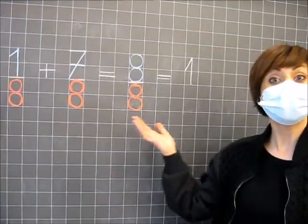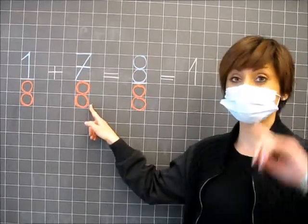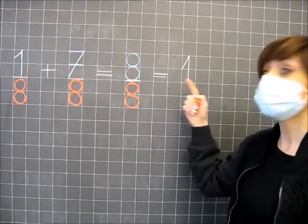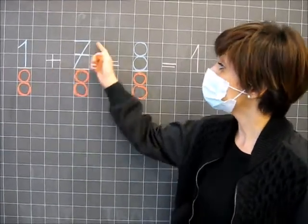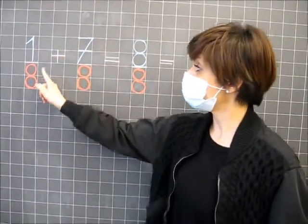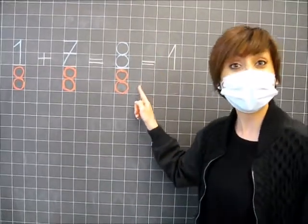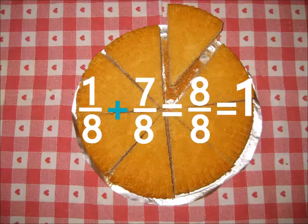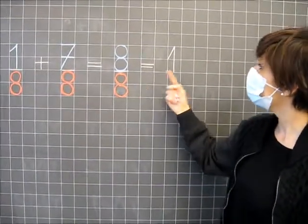This is an addition: one eighth plus seven eighths equals eight eighths. Eight eighths equals one whole. One eighth and seven eighths are complementary fractions because one eighth plus seven eighths together make eight eighths — one whole. Complementary fractions complete a whole.